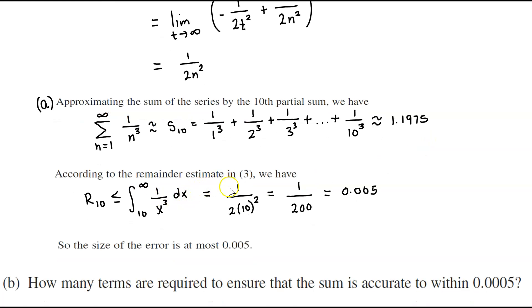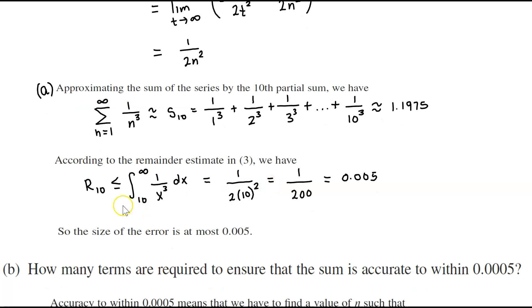Now according to the remainder estimate in definition 3, then we have the following. The remainder estimate when n is equal to 10 is less than or equal to 1 over x cubed dx as 10 goes to infinity is going to equal 1 over 2 times 10 squared,